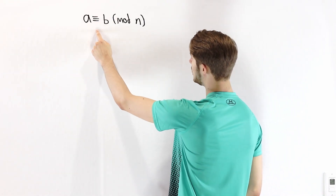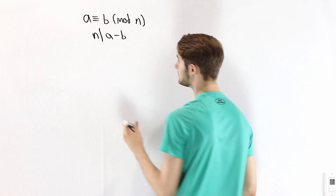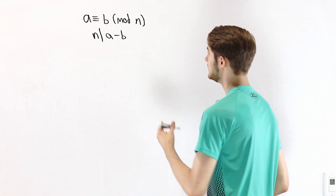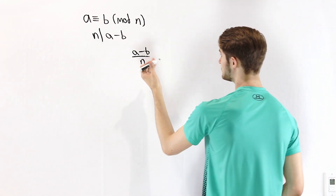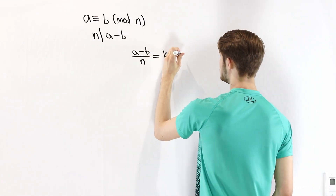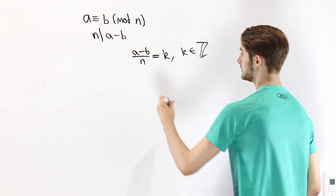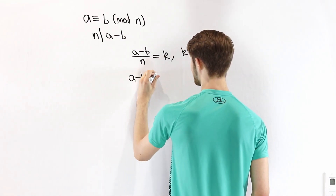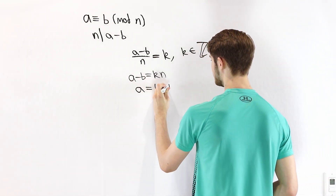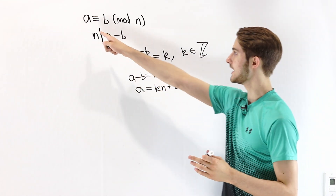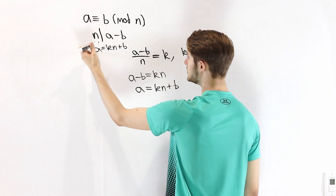We define A to be congruent to B mod N if and only if N divides A minus B. By the definition of divisibility, if N divides A minus B, that means A minus B over N has to be a whole number — equal to some integer K. Multiplying both sides by N gives A minus B equals KN, and adding B to both sides gives A equals KN plus B. This is another equivalent definition for A congruent to B mod N.